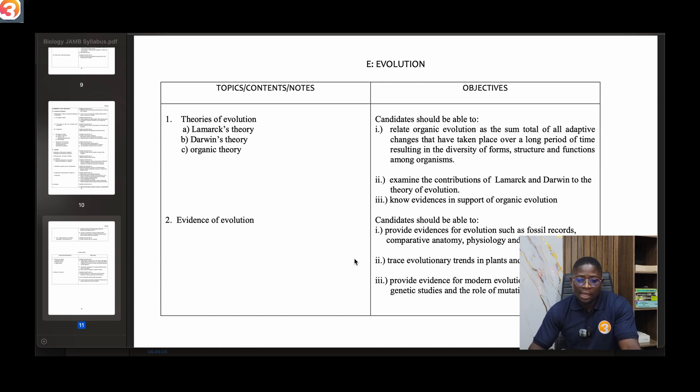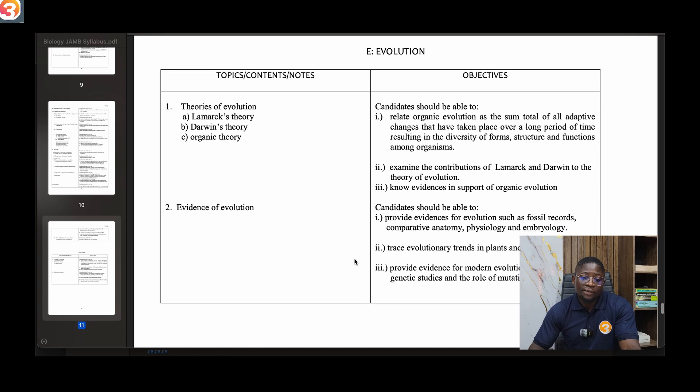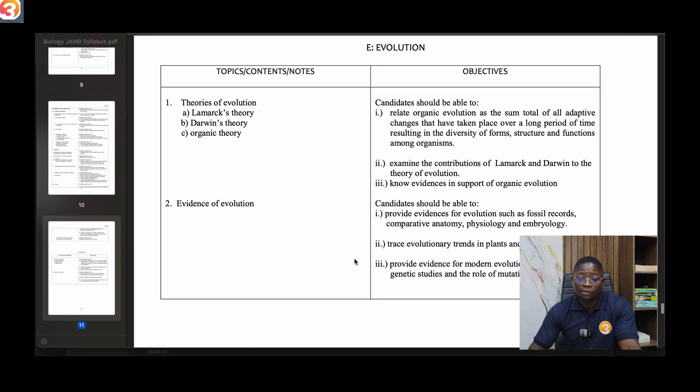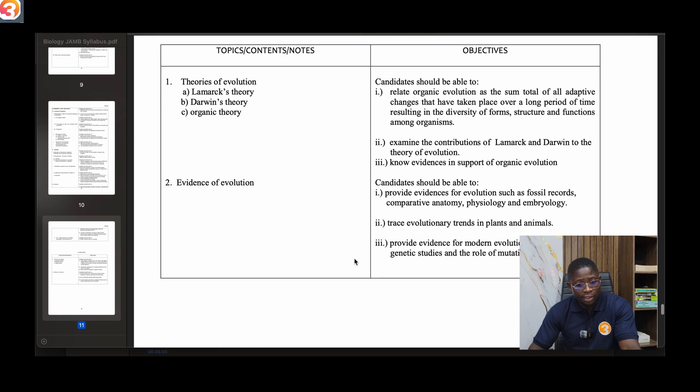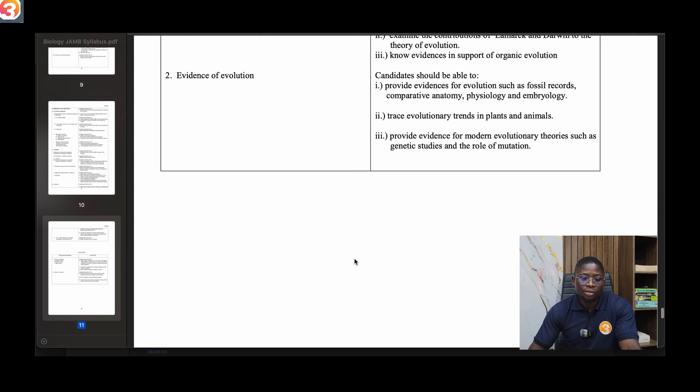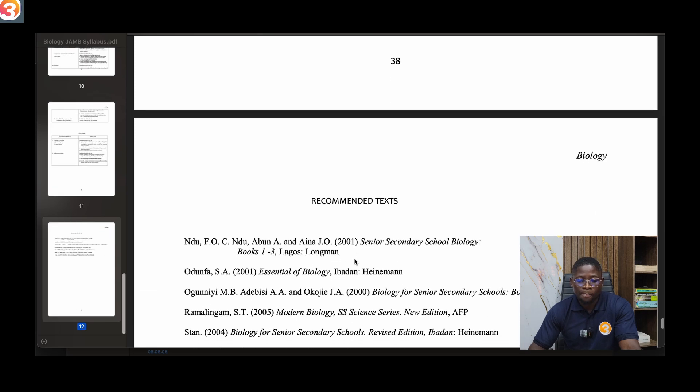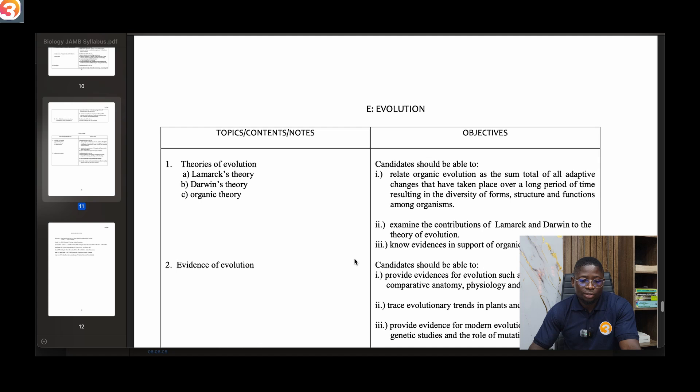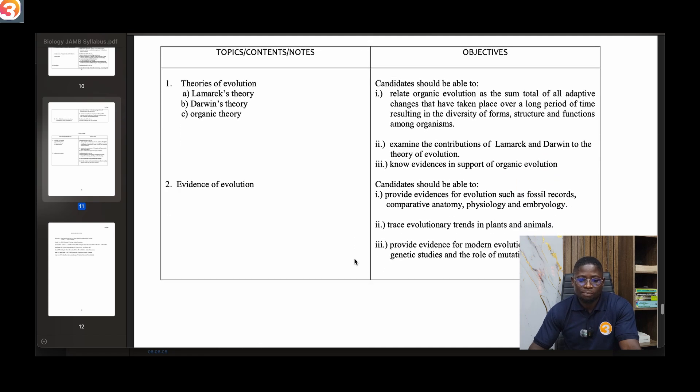The fifth part which is evolution - many students usually find it difficult to really understand evolution. The first topic you'll talk about is theories of evolution - Lamarck's theory, Darwin's theory, organic theory of evolution. Then two, evidence of evolution. That is the last topic evolution in the last part and the last topic.